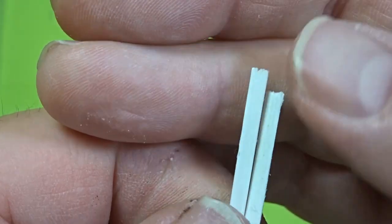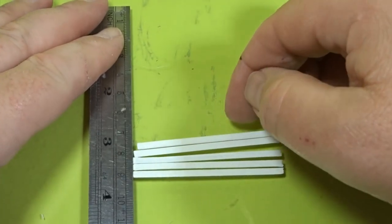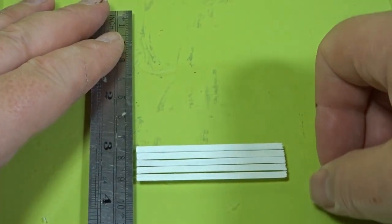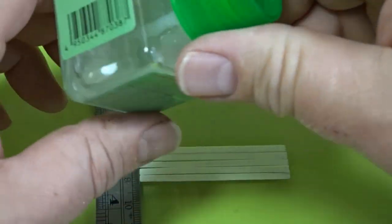Once that's done we take the craft knife and just add a little bit of texture. And as you can see we have the clean edge at one end and the broken edges down at the other end.